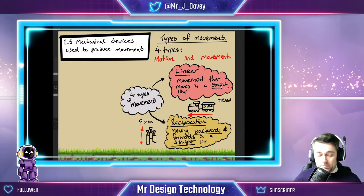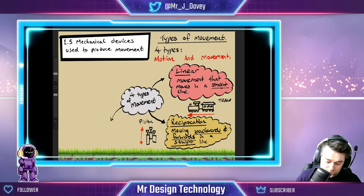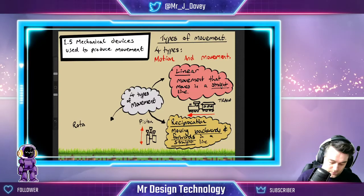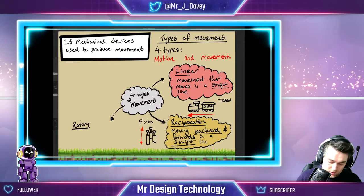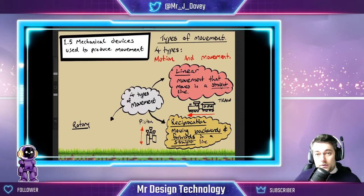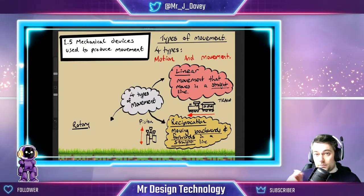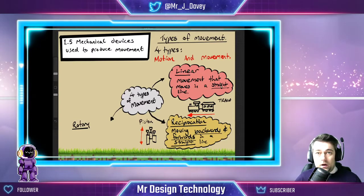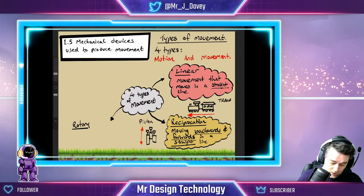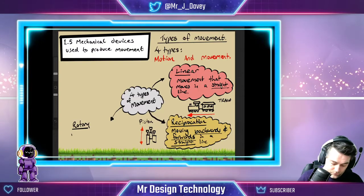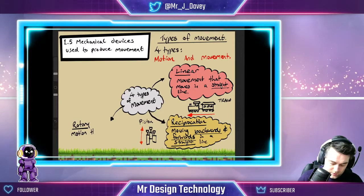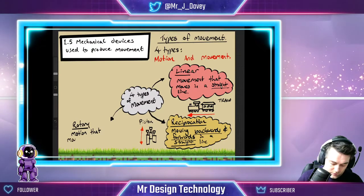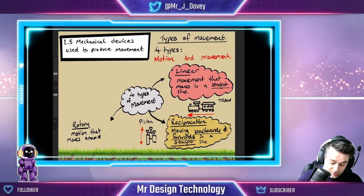Our third type of movement is rotary. Rotary movement — it probably goes without saying — is something that rotates around a central point, like a wheel on a car. So it is a motion that moves around a central point.